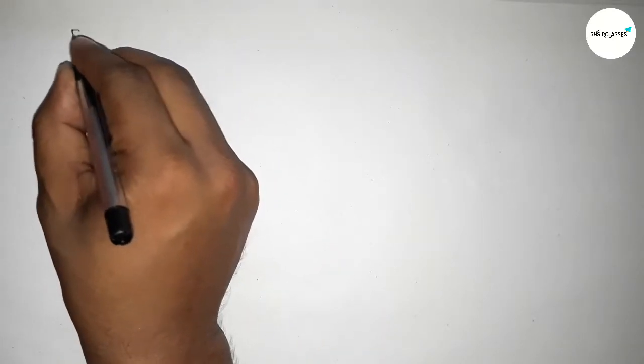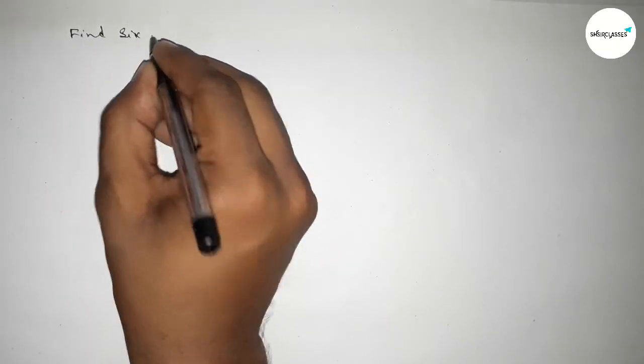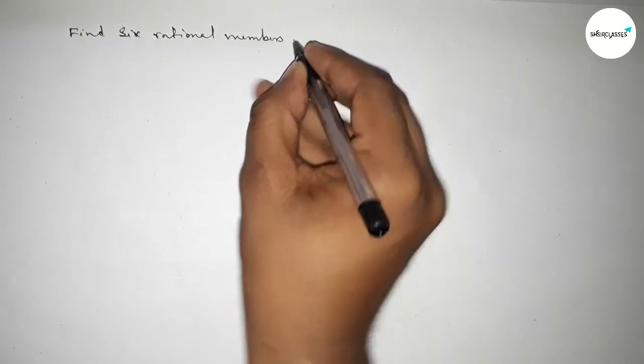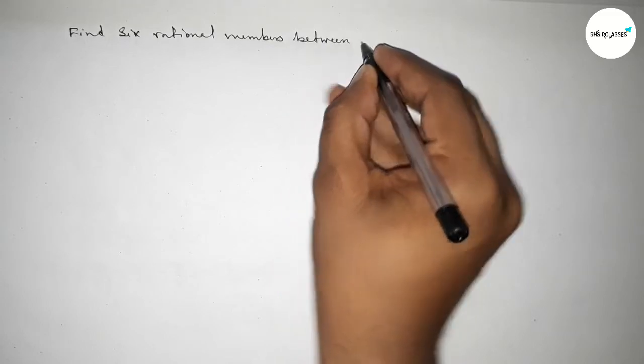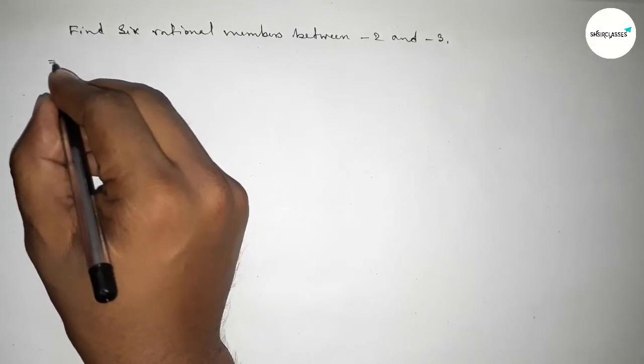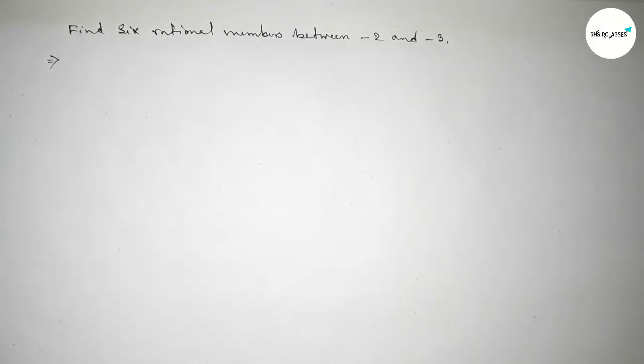Hi everyone, welcome to SSR classes. Today in this video we have to find out six rational numbers between minus 2 and minus 3. So let's start the video. First of all, write down here the given two numbers minus 2 and minus 3.